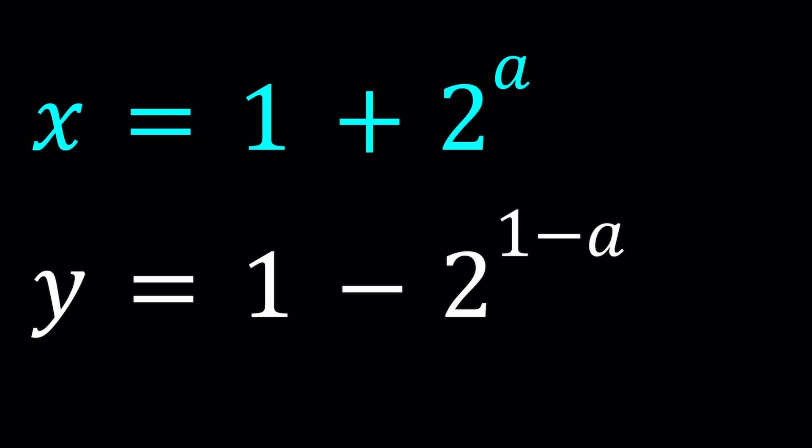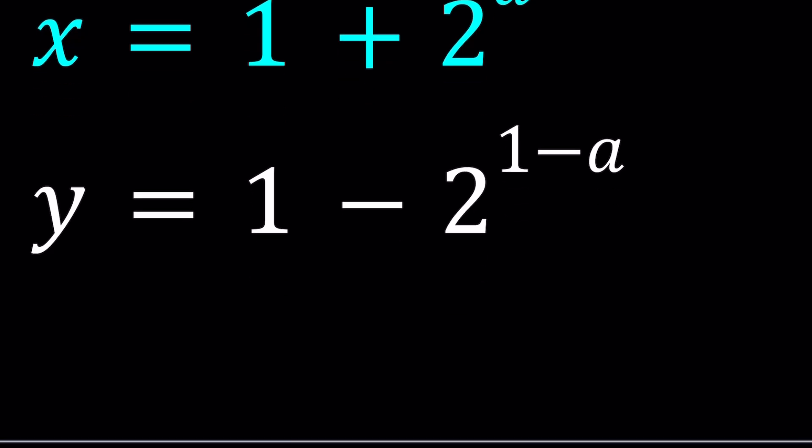You can also talk about the derivatives. For example, since x is a function of a, a being the variable here, the independent variable, then you can talk about dx over da, you can also talk about dy over da, which is the derivative of y with respect to a, and then from these you can try to evaluate dy over dx. How does y change with respect to x?